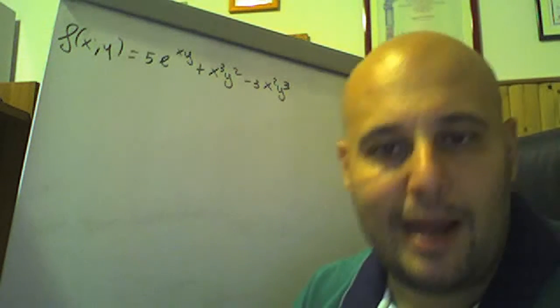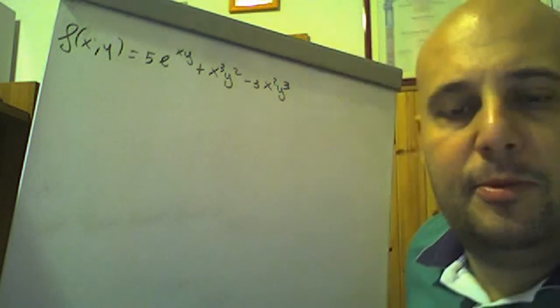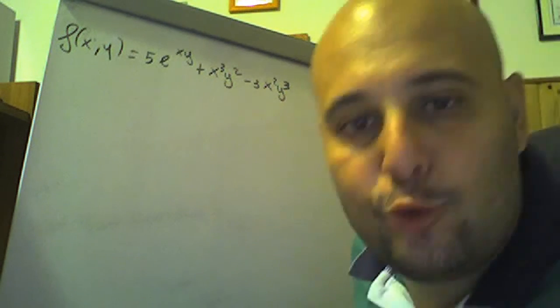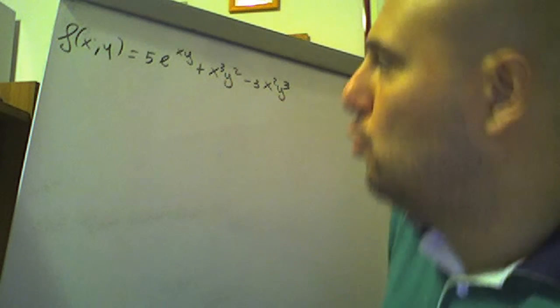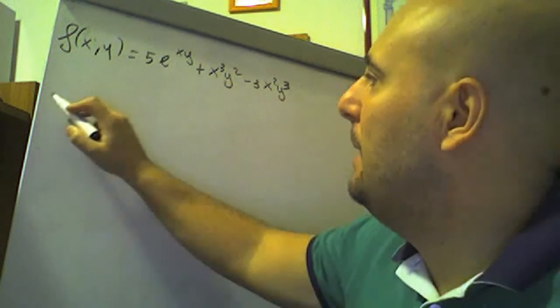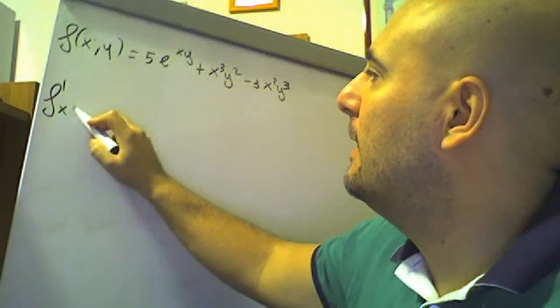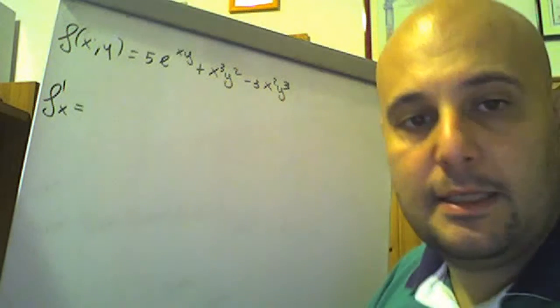f(x,y) è uguale a 5e elevato a xy più x cubo y quadro meno 3x quadro y cubo. Cominciamo con la derivata parziale prima della f fatta rispetto alla x.